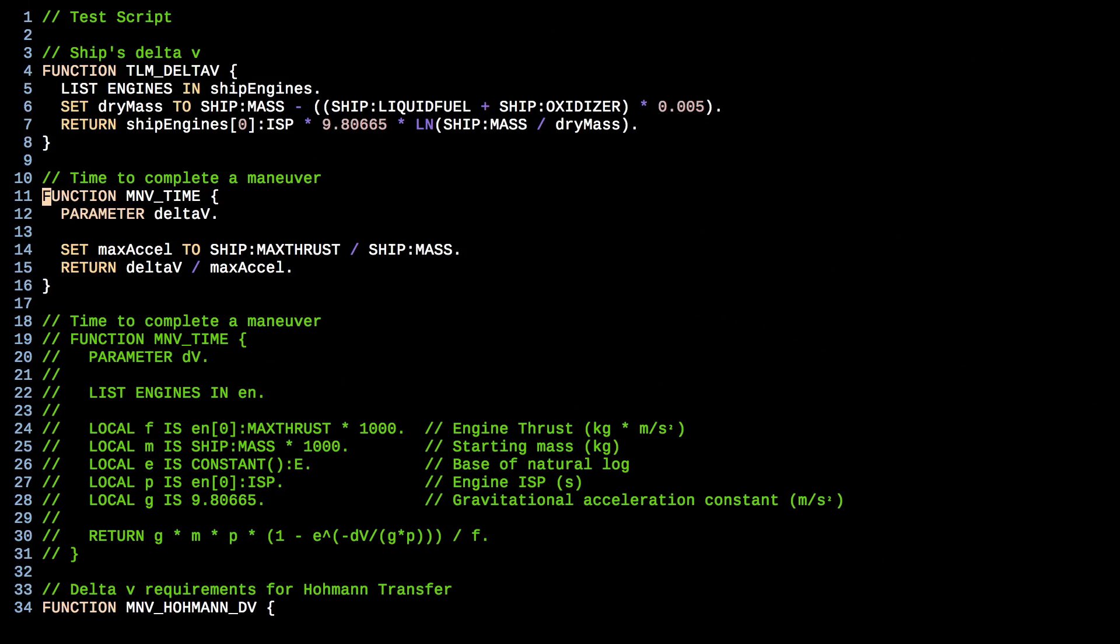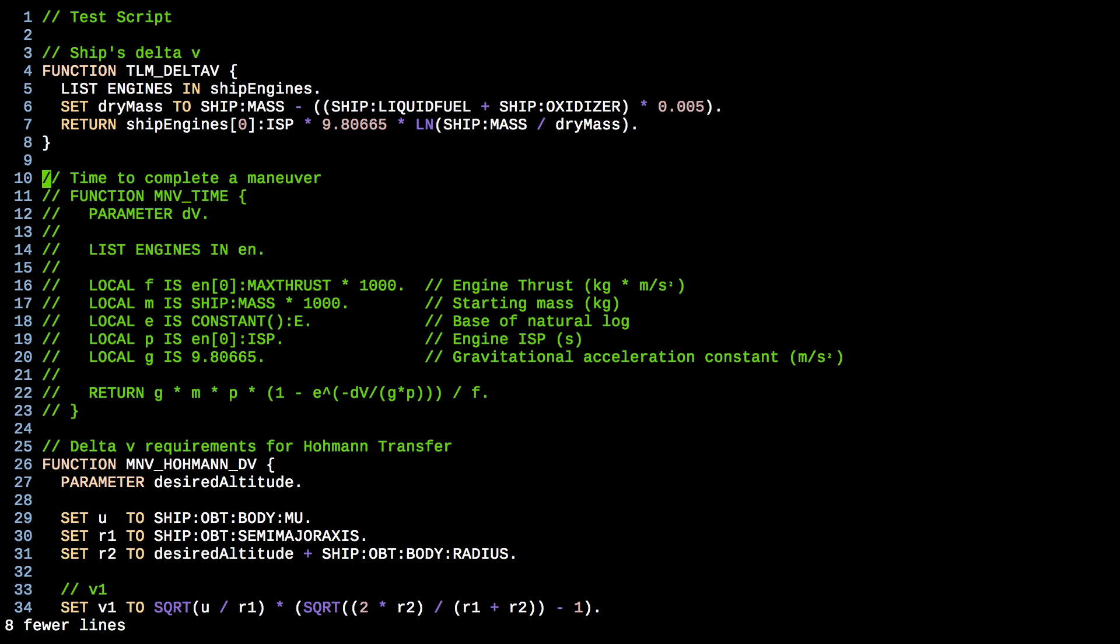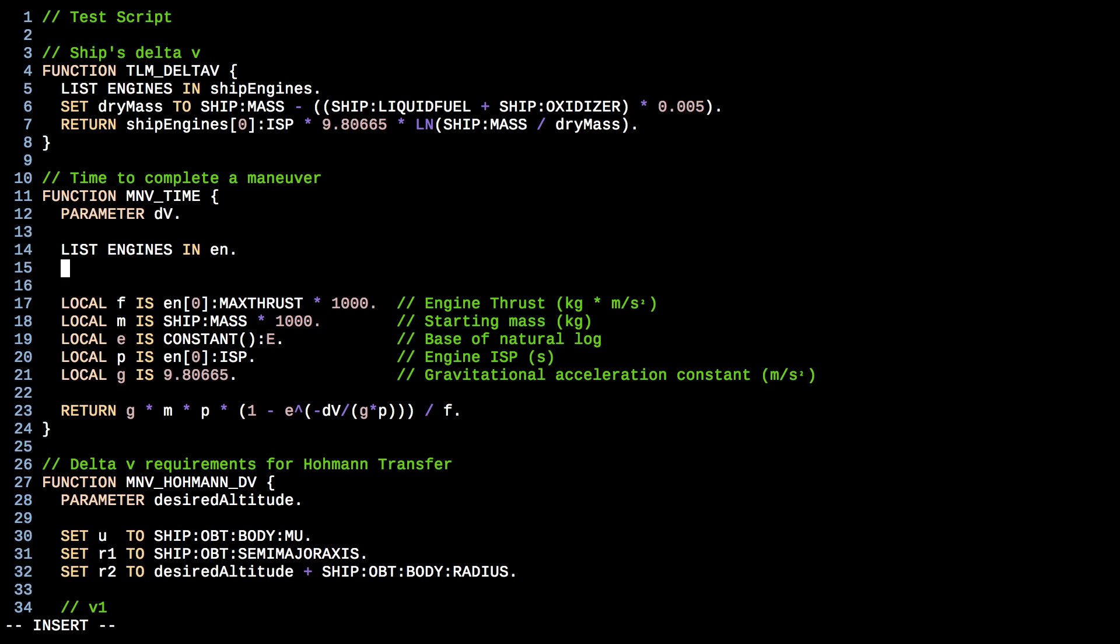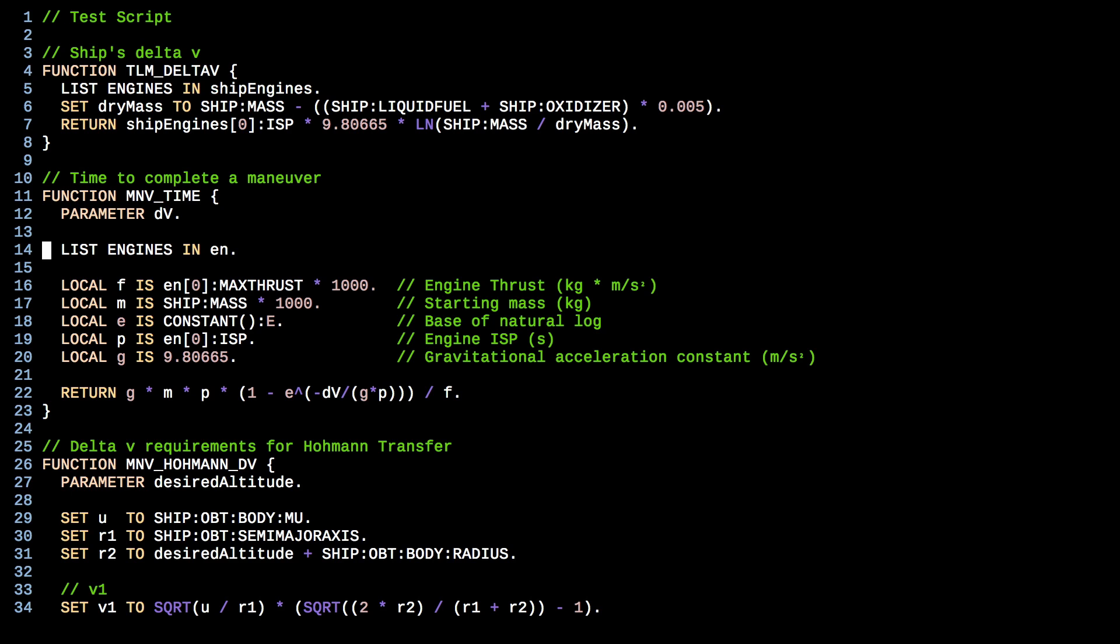So here we are in our original function back from the previous episode. And we have this maneuver time, and it takes a delta v, and we figure out our acceleration based on our thrust and our mass. And then we just divide the delta v by the acceleration. But we know now that that is a foolish way to do things because our mass is not consistent. So let's go ahead and delete all of that. And I've gone ahead and written up this better function based on what we derived. We're still going to take in this parameter delta v. We're going to list all the engines into a variable called en. And that's just going to give us, you know, engine 1, engine 2, etc. And I'm going to assume that we're just looking at the first engine. We're going to get the ISP, the specific impulse of that engine, and the thrust of that engine.